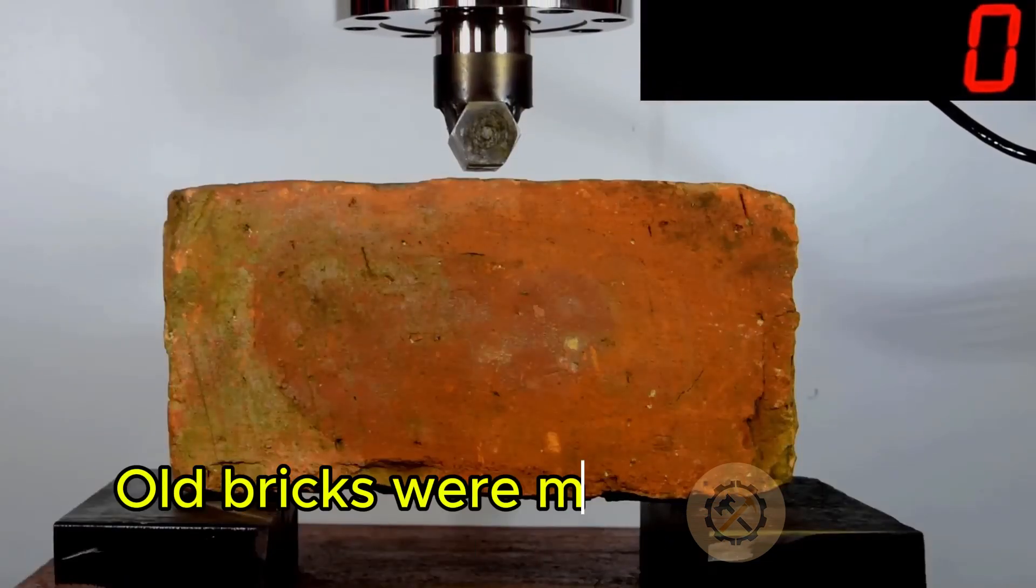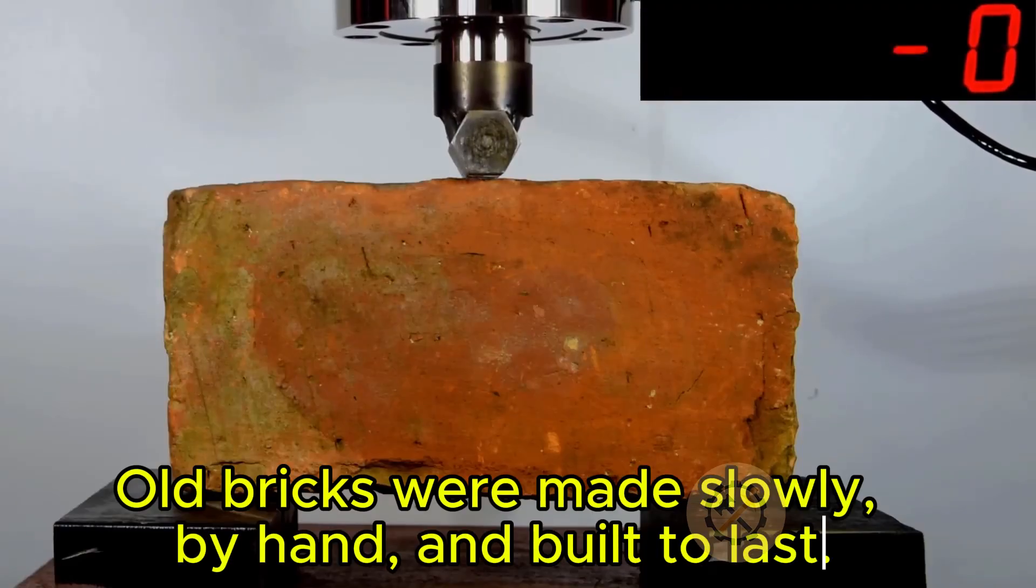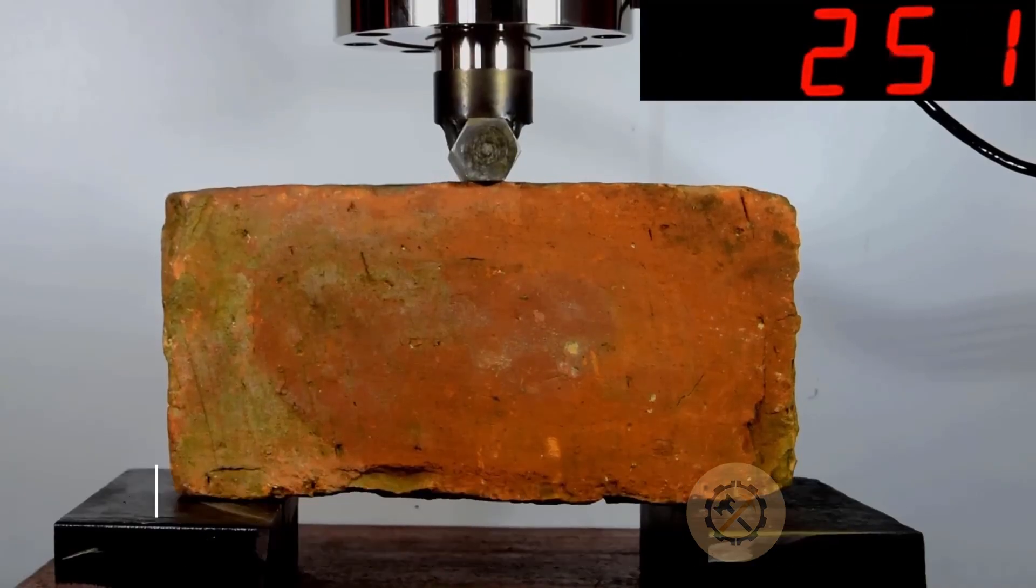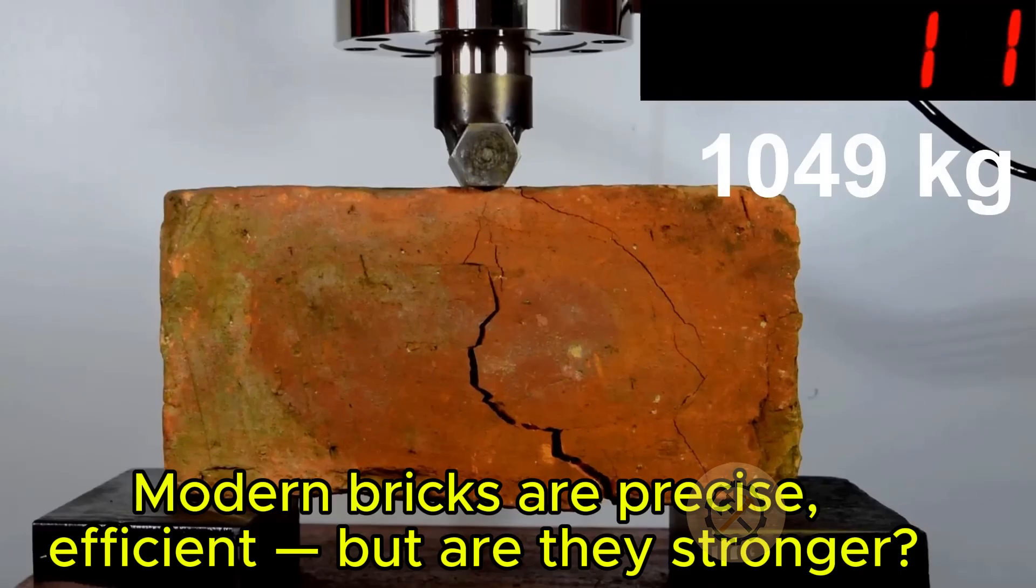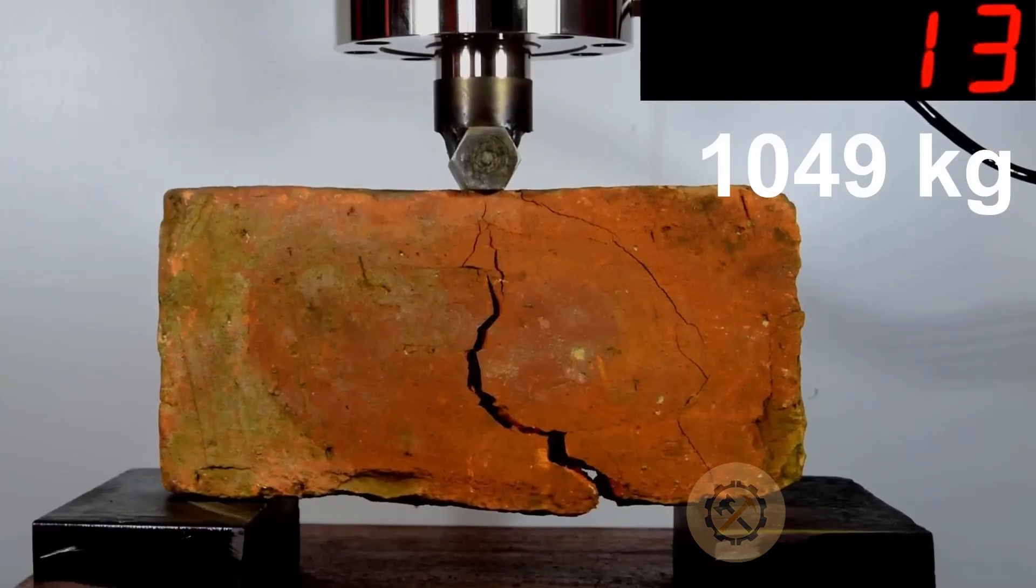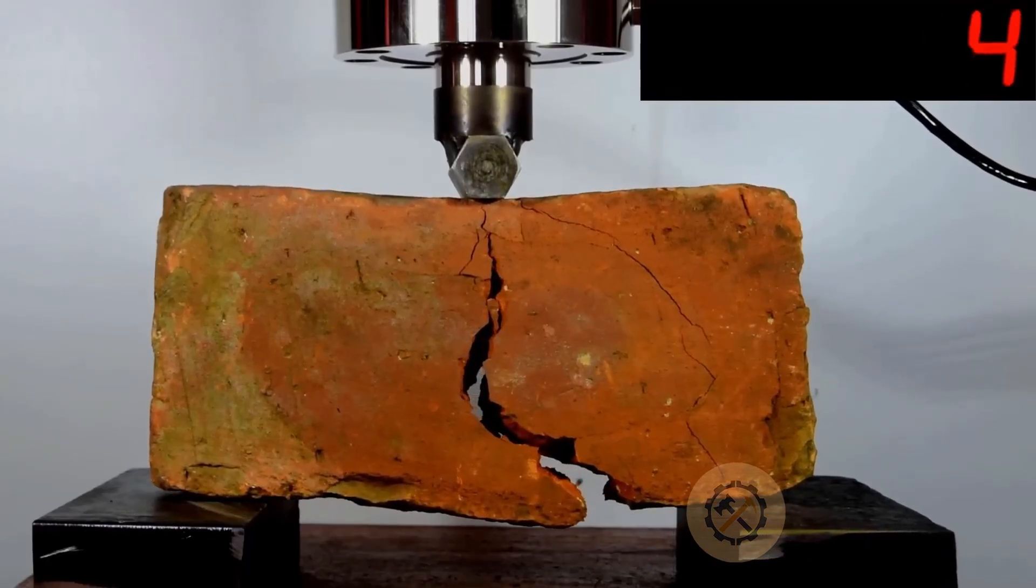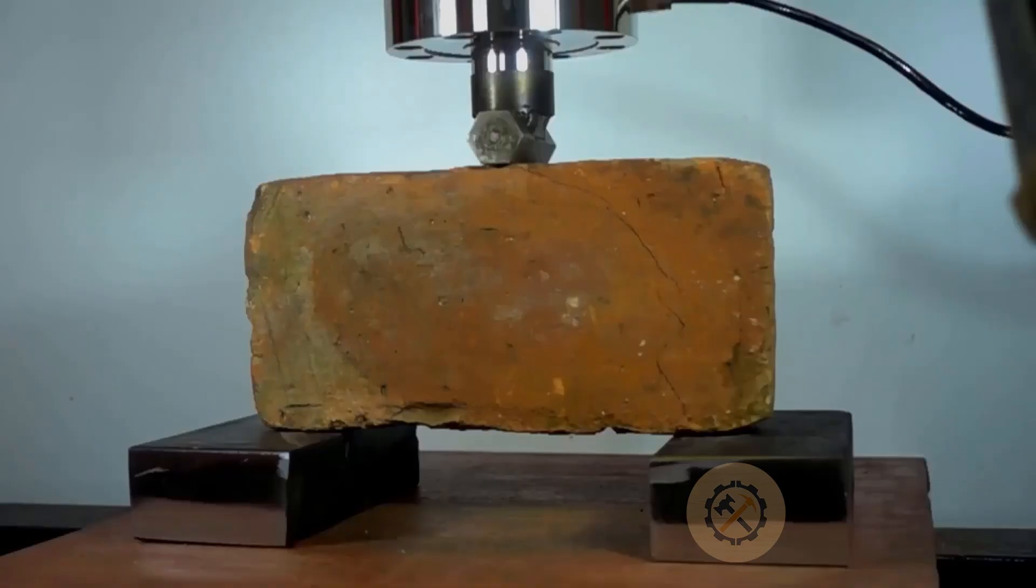These bricks were built to last, and many of them have. The modern brick, on the other hand, is produced using precise industrial techniques. Machines control the temperature, composition, and moisture content. It's consistent, efficient, and designed to meet today's standards for construction.